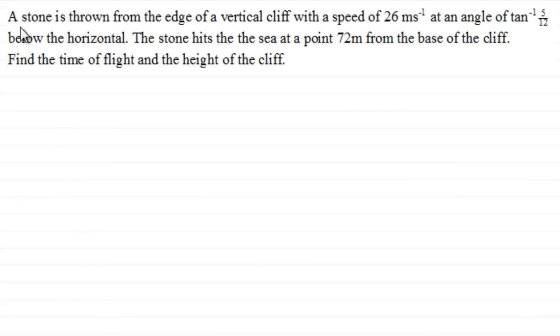A stone is thrown from the edge of a vertical cliff with a speed of 26 meters per second at an angle of inverse tan 5/12 below the horizontal. The stone hits the sea at a point 72 meters from the base of the cliff. We've got to find the time of flight and the height of the cliff.